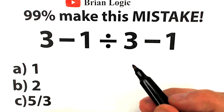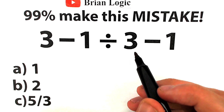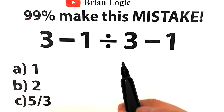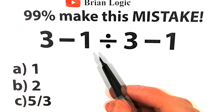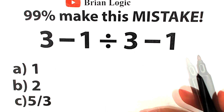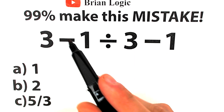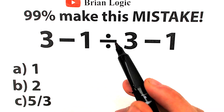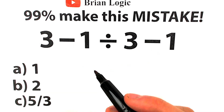Hello everyone, welcome back to my channel BrainLogic and let's solve this really interesting math challenge. Right here we have 3 minus 1 divided by 3 minus 1. Seems pretty basic, seems pretty easy — we have simple subtraction, simple division. So what is the correct answer?